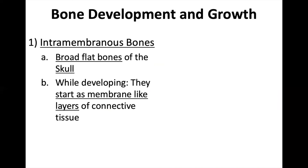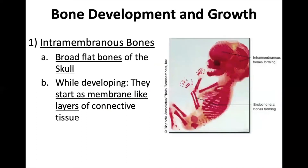While developing, they start off as membrane-like layers of connective tissue. This picture is an actual fetus — very, very early stage, so small we're looking at it under a microscope. Looking at the skull, you can see individual pieces of cartilage, membrane-like layers of connective tissue. As this fetus grows, it's going to undergo ossification — the cartilage is going to get replaced with bone material during protein synthesis and exocytosis, like we just talked about. It will become solid bone, and these pieces will eventually fuse together after it's born.